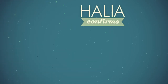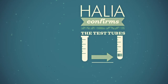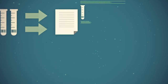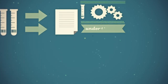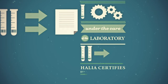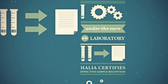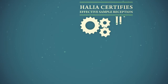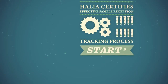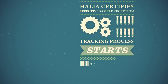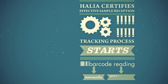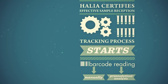HALYA confirms the test tube's arrival through the reading of a barcode. Now the test tube is under the care of the laboratory and HALYA certifies the effective sample reception. From this moment, the sample tracking process starts. The barcode reading can be done manually or by pre-analytical analysis equipment.